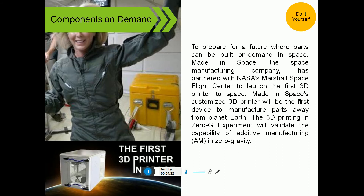Parts can be built on demand in space. Space manufacturing companies are partnering with NASA's Marshall Space Flight Center, launching the first 3D printer in space. Made In Space created a customized 3D printer that will be the first device to manufacture parts away from Earth. The 3D printing zero-G experiment will validate the capability of manufacturing in zero gravity.